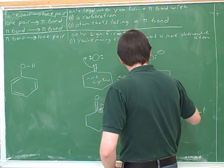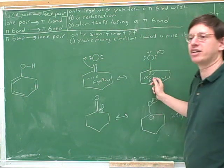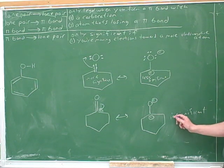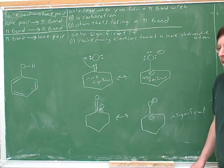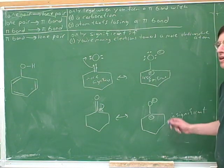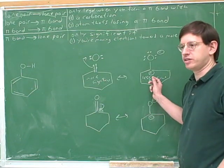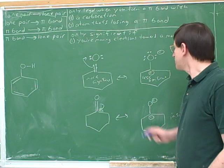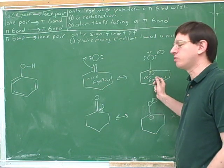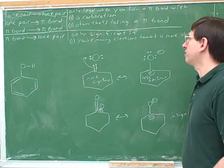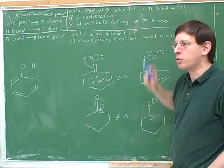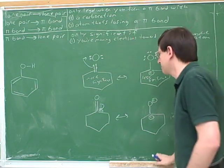This other structure is less significant, but still worth drawing. This third structure is so insignificant that we wouldn't draw it, even though it is technically legal because it hasn't broken the octet rule. I only drew all three of these to illustrate the ideas. On an actual problem, these would be the only two resonant structures you would bother drawing — both the more significant and the less significant ones. We should just avoid the ones that are completely insignificant or illegal.